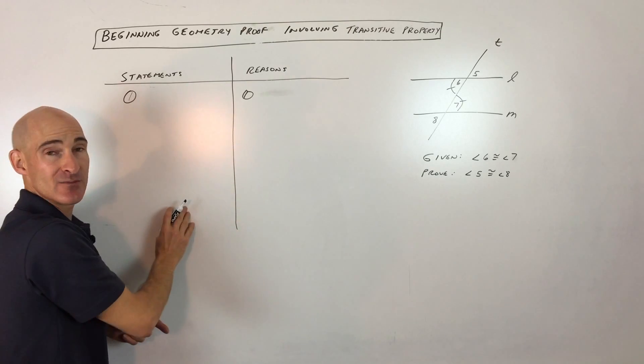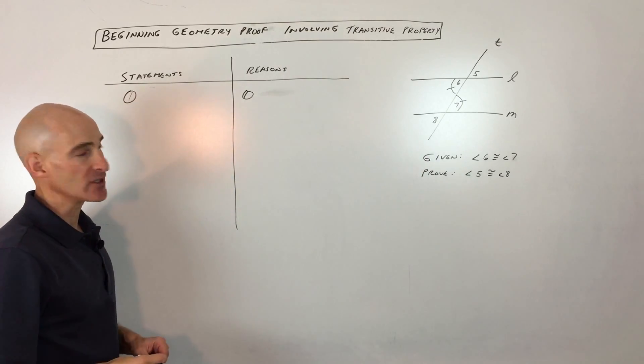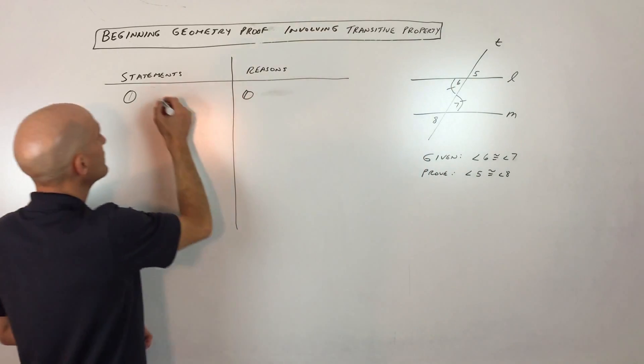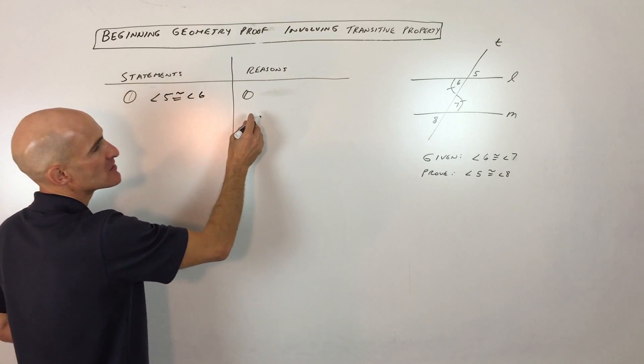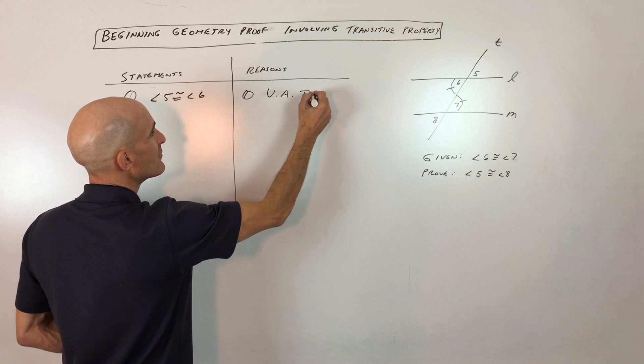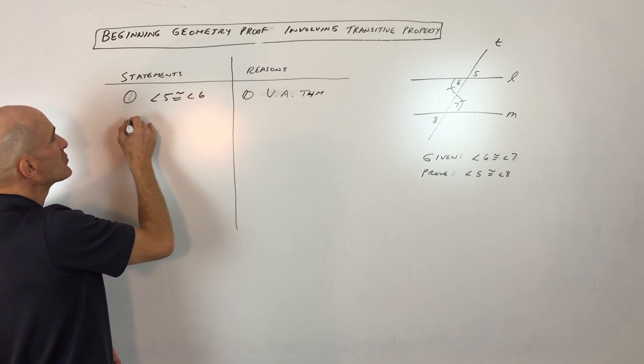And then you want to fill in the in-between steps that gets you from the beginning to the end sequentially. So I think for the first step, let's just say that angle 5 is congruent to angle 6. And the reason for that would be vertical angle theorem. So I'm just abbreviating here, but you can write it out. Vertical angle theorem. And then let's go to step number two.